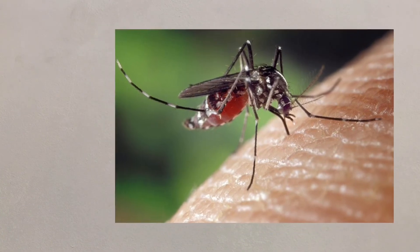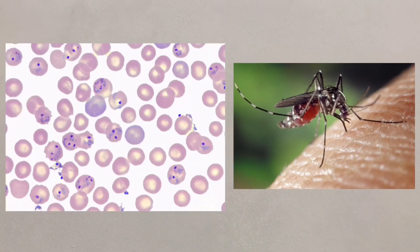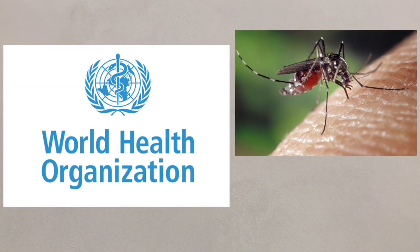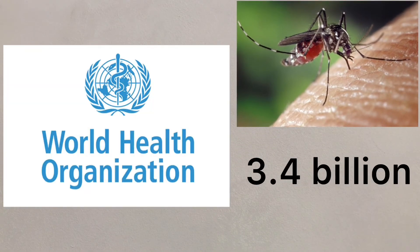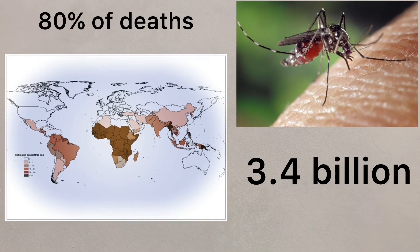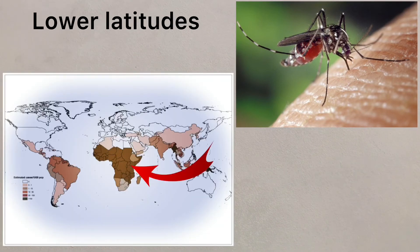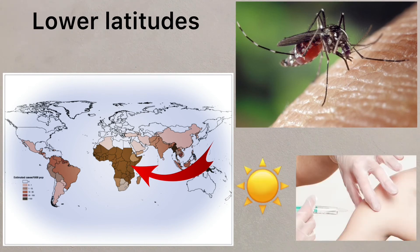Malaria is a major life-threatening disease, where infected parasites are passed into humans through infected mosquitoes. The World Health Organization believes around 3.4 billion people across 92 countries are at risk of malaria infection, with around 80% of deaths coming amongst African children. The concentration of cases is in lower-latitude countries, where the weather is warmer and where there is less money for vaccination projects.